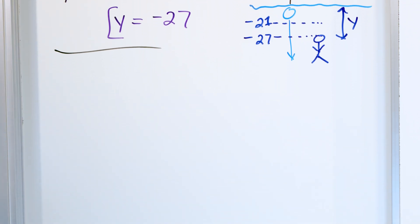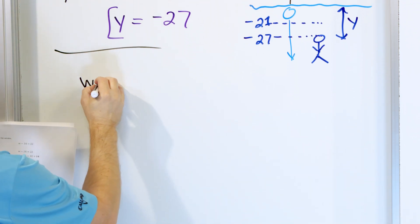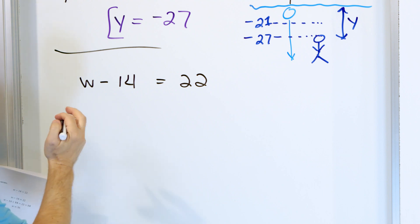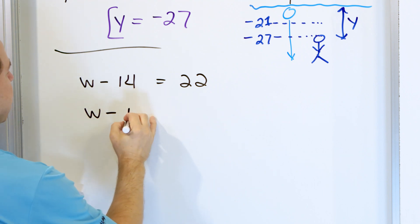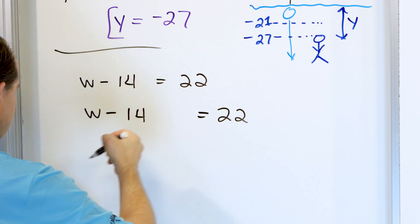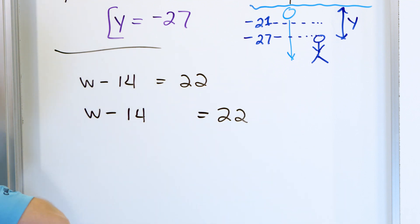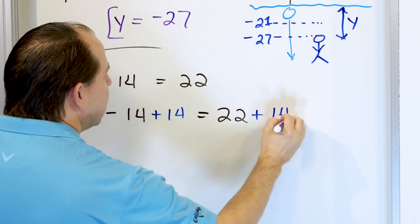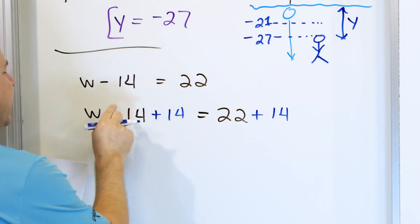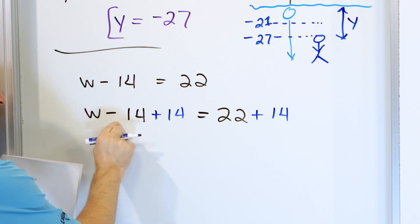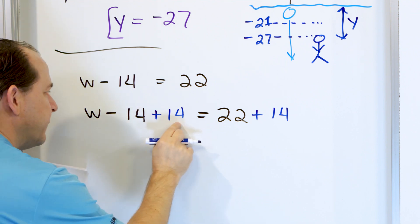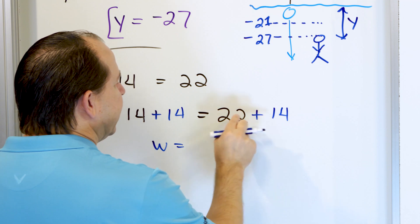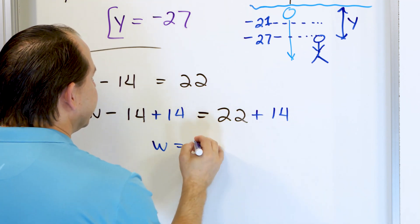Let's take a look at problem number two: w minus 14 is equal to 22. We're focused more on just solving now since we can make up many situations. Here we are subtracting 14. We want this variable by itself, so we must add 14. But if we do it to one side, we have to keep it balanced by adding 14 to the other side. Remember the sign that comes before the number is the sign attached — so this is negative 14 plus a positive 14, which gives zero.